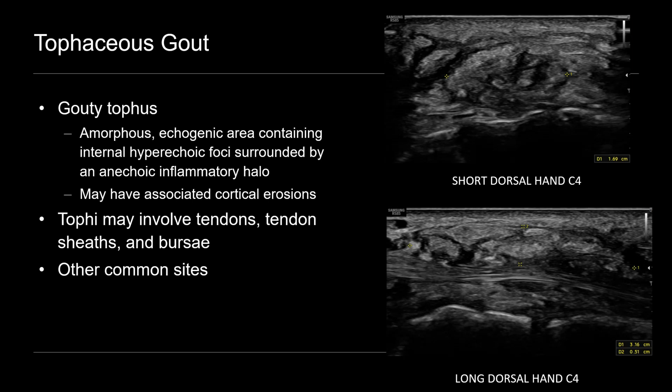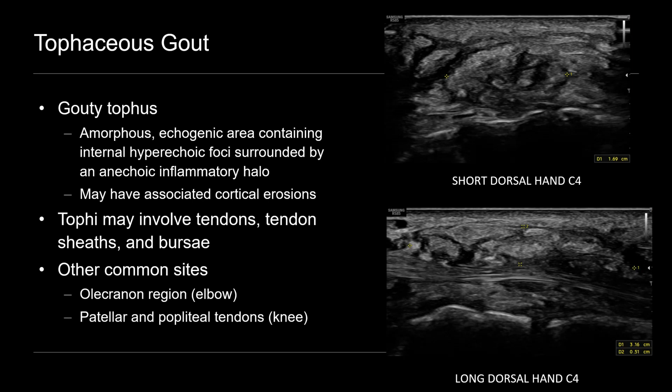Tophi can involve tendon sheaths, tendons, and bursal structures. Other common sites for tophaceous gout include the elbow about the olecranon — the posterior aspect of the elbow — and around the knee at the patellar tendon and patellar tendon origin.